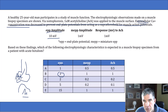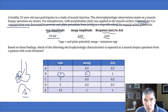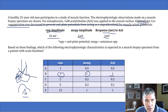MEPPs are miniature end plate potentials, and they are spontaneous depolarizations of muscle cells. They're not affected by botulism, so that number in the correct answer is the same as in the healthy person. And then finally, just like we talked about before, the response of the muscle tissue to acetylcholine — which was 1 millivolt in the normal person — is also going to be 1 millivolt in the person with botulism, because botulism affects the neuron but it doesn't affect the muscle cell itself.